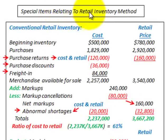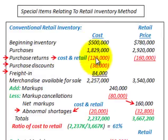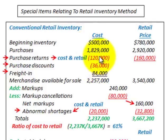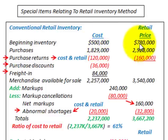Here we're going to be looking at special items that relate to the Retail Inventory Method. We have a retail store with a cost column showing what they paid for merchandise and a retail price column showing what the store charges the customer. We'll be going through the conventional retail inventory method to determine our ending inventory at retail and then, using our cost-to-retail ratio, our ending inventory at cost.